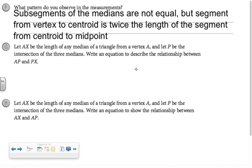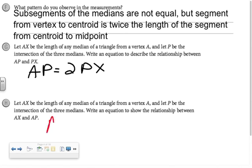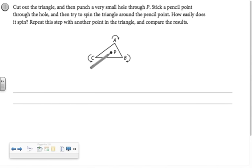The pattern that we observe in the measurements is that the sub-segments of the medians are not equal, but the segment from vertex to centroid is twice the length of the segment from centroid to midpoint. If AX is the length of a median from vertex A, and P is the intersection of the three medians, the centroid, write an equation to describe the relationship. AP equals two times PX. In part H, to show the relationship between AX and AP: AP is two-thirds the length of AX.